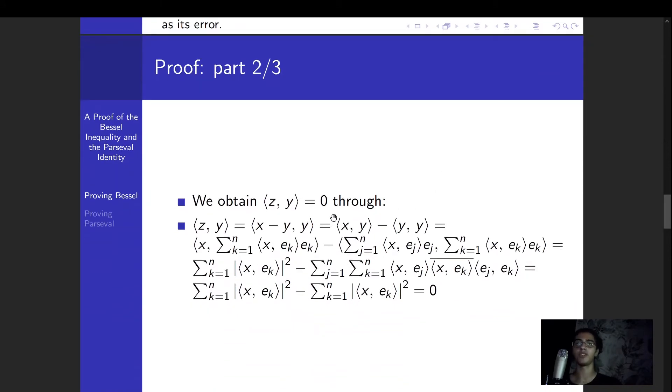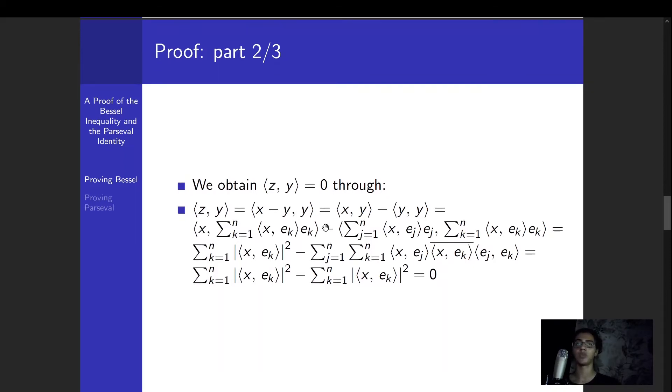And now in part two, we're going to use this z and y by trying to prove that they are orthogonal. So trying to prove that their inner product is zero. And to do that, it's just one straightforward calculation. We just calculate the inner product pretty directly. Just put z and y, try to take the inner product of z and y, expand z out, and the rest is a calculation. You may pause it if you wish to go through it in more detail. But in the end, we do get our results.